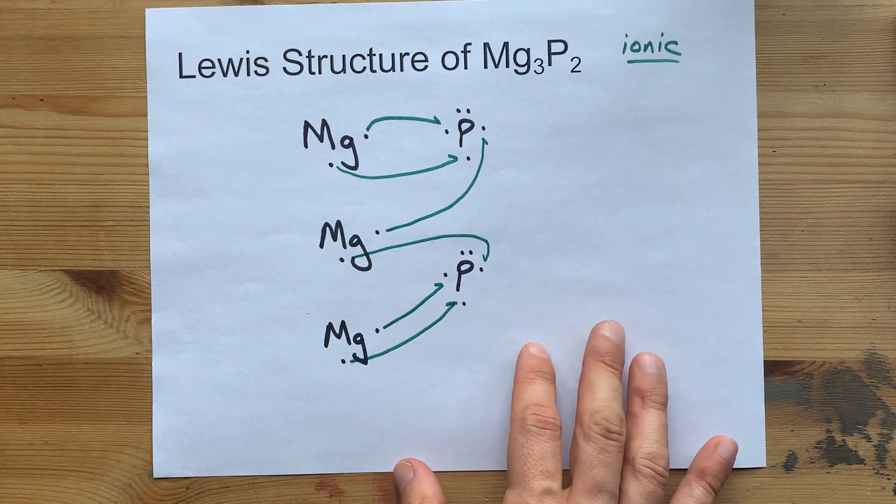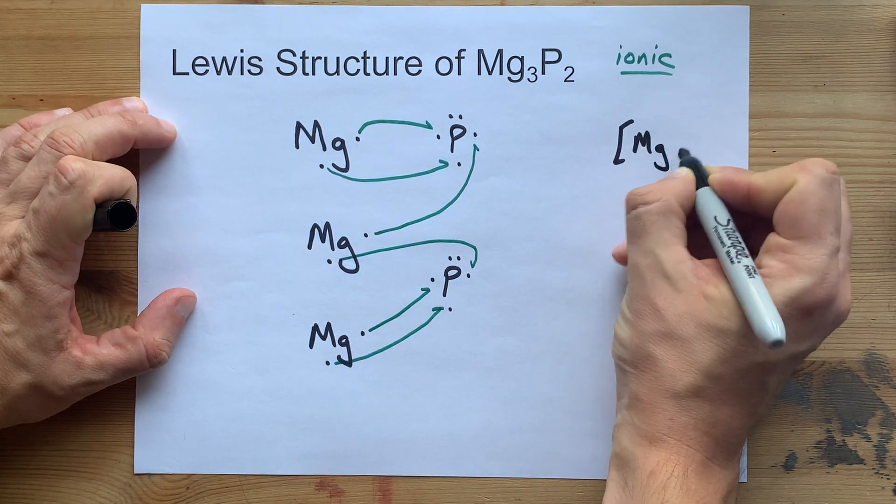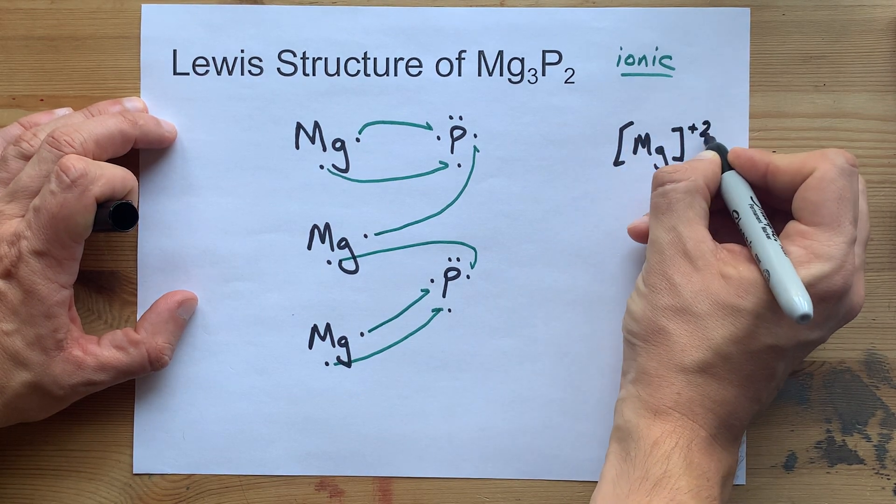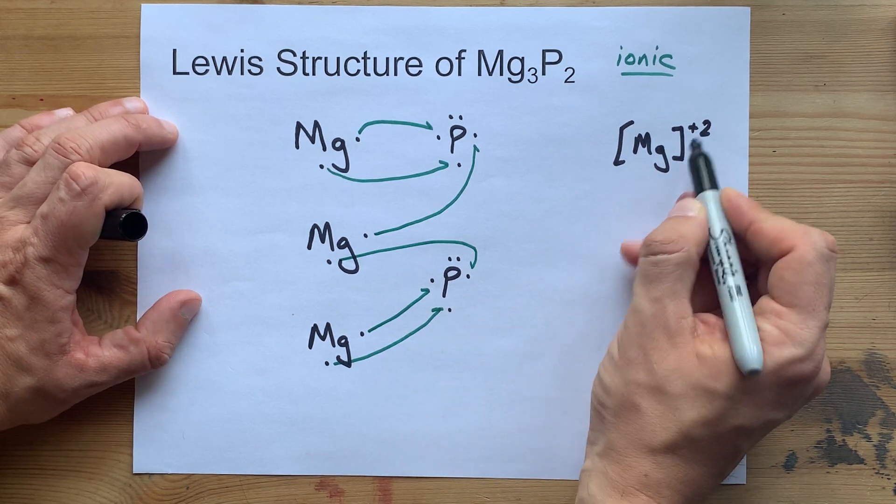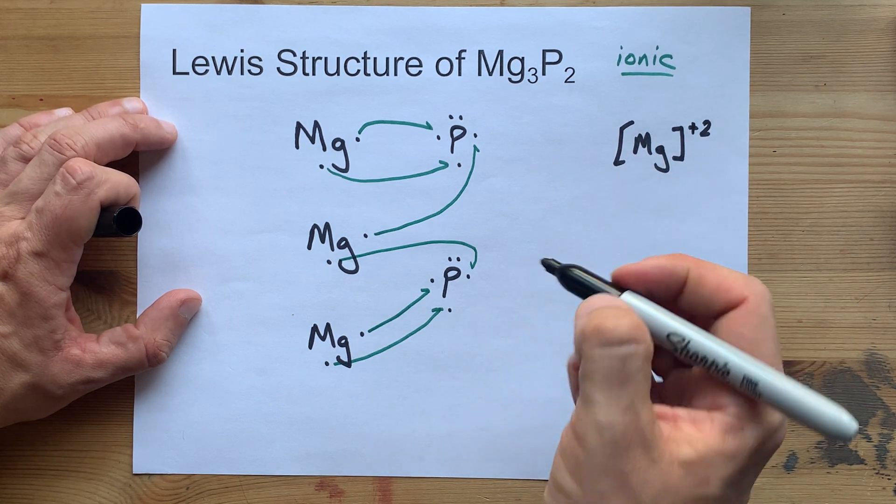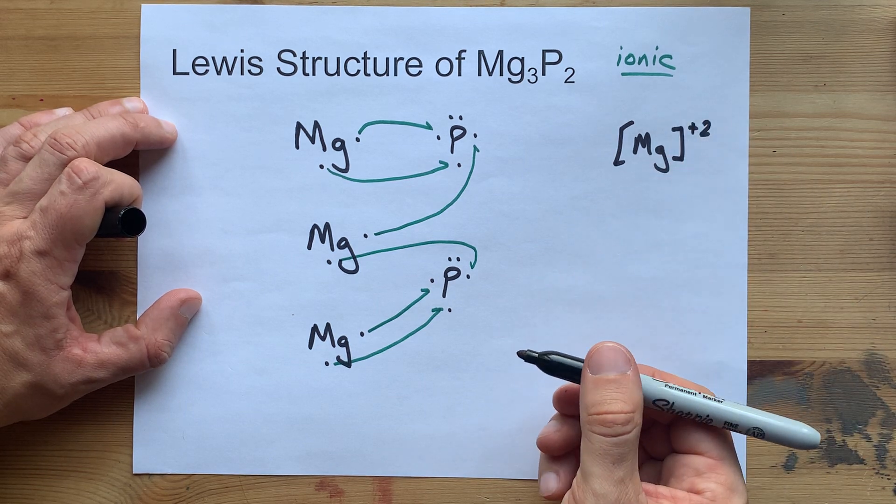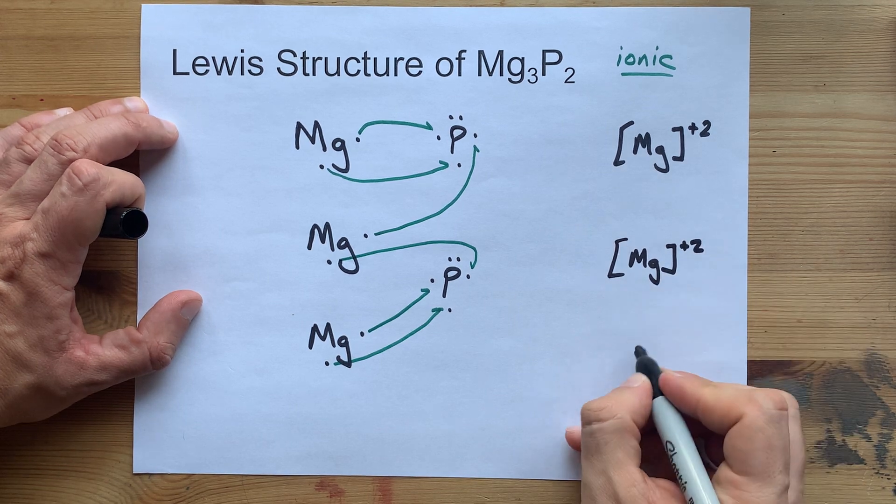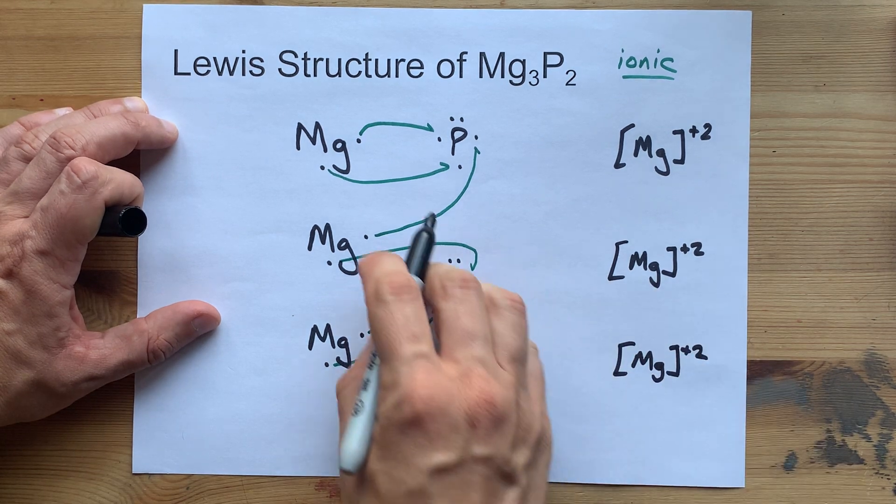This is the transfer. Let's draw the final Lewis structure. Mg gave away its electrons, so don't put any dots around it. Do put it in square brackets to show that it's charged, and write the charge in the top right corner. The charge of plus 2 is because you lost two negatively charged electrons. Losing minuses gives you a plus charge. You're going to have to draw that three times because you needed three of them to make the magic happen.